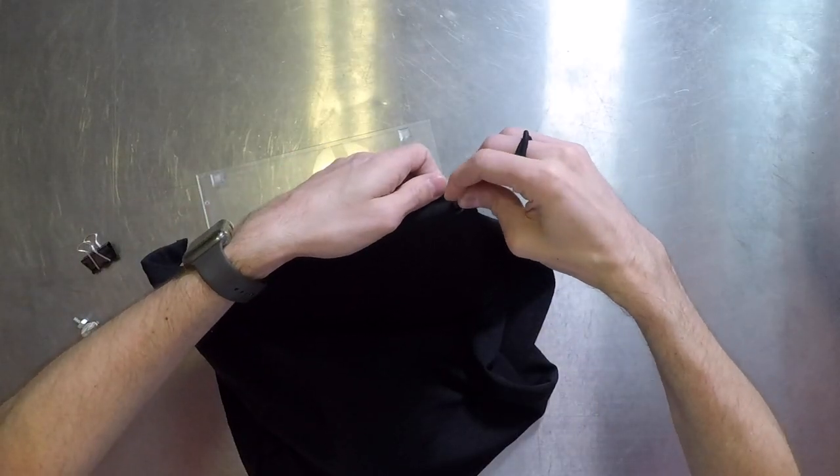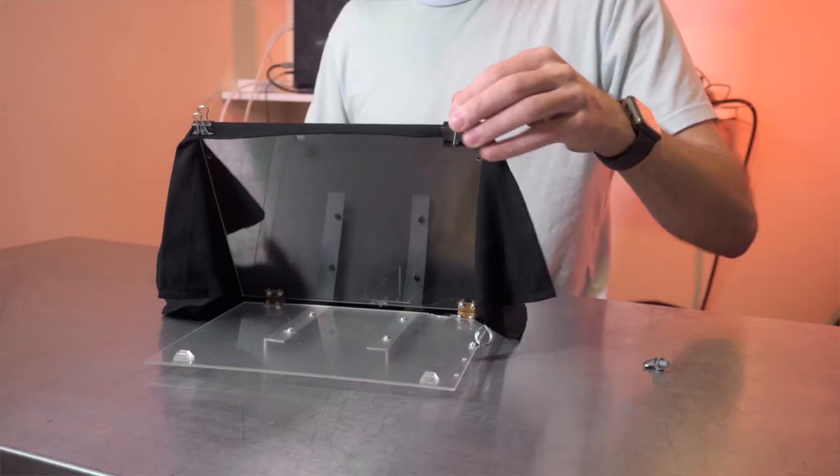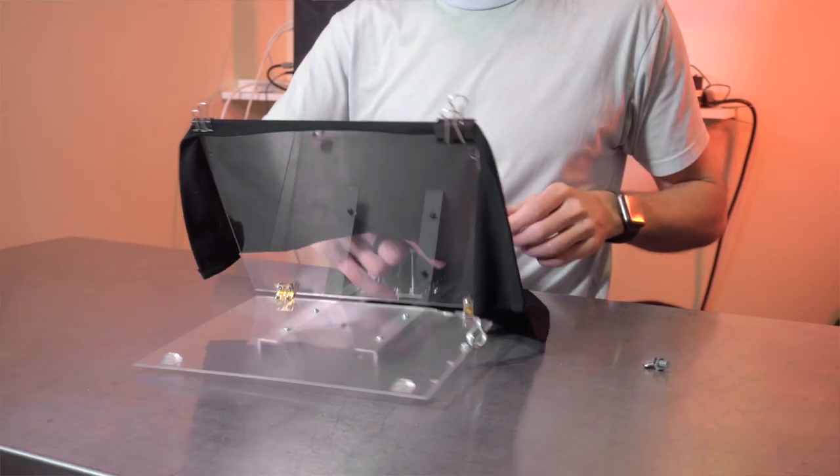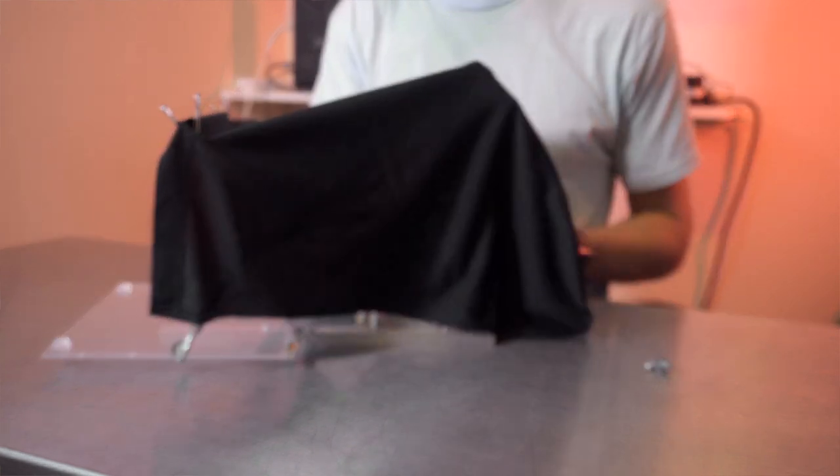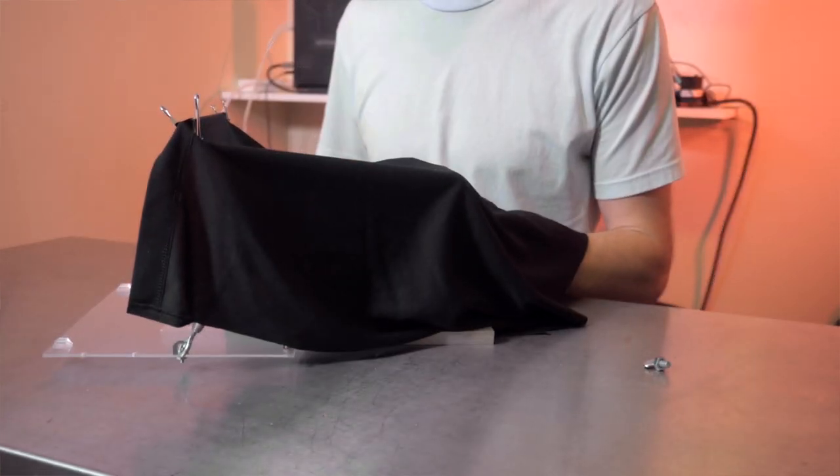You can find these at any office supply store or even a dollar store. I'm using these just to clamp the t-shirt onto here. And then the camera, I just draped the piece of fabric over the camera and it blocks out a good amount of the light.